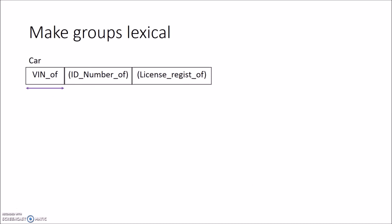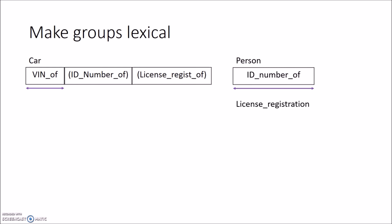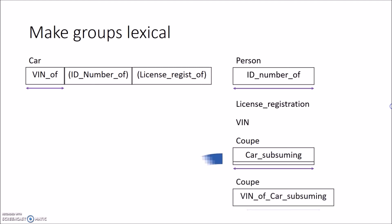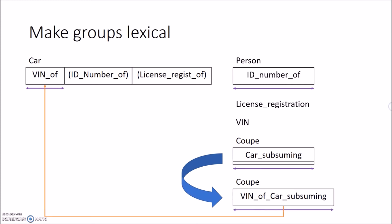In the second example, we make 'VIN of' the primary key for table 'car'. Car is connected to person, but person does not have any columns derived from car. Car is also connected to 'license registration' and 'VIN', but both also don't have any columns derived from car. Car is the supertype of 'coupé', which has the column 'car subsuming' derived from car. So we replace the non-lexical column with the lexical 'VIN of car subsuming' equivalent and add a foreign key to 'VIN of' in the car table.